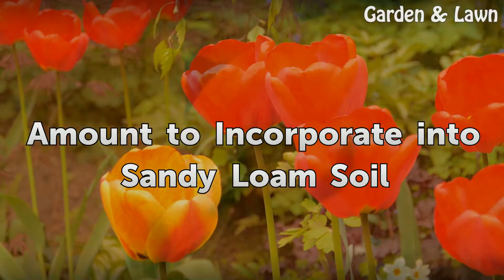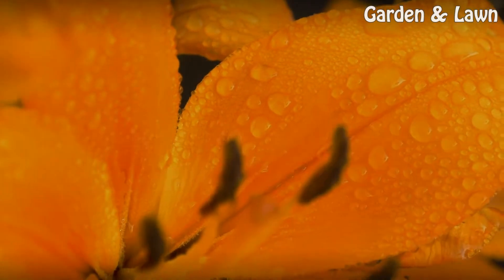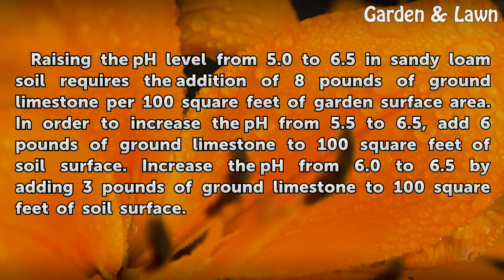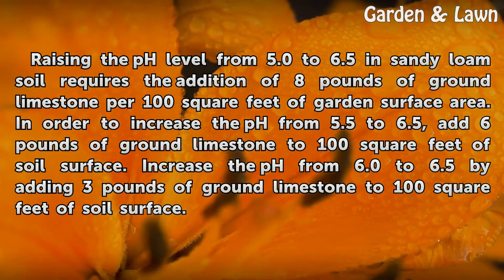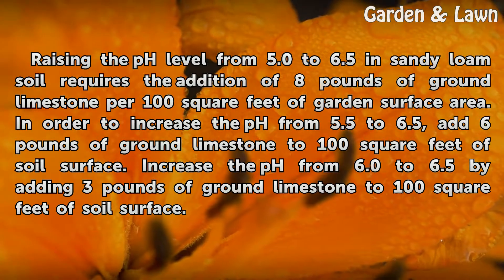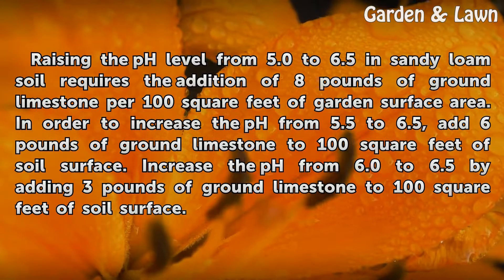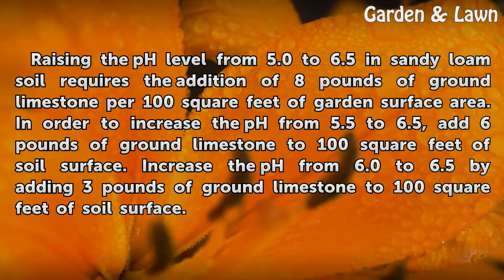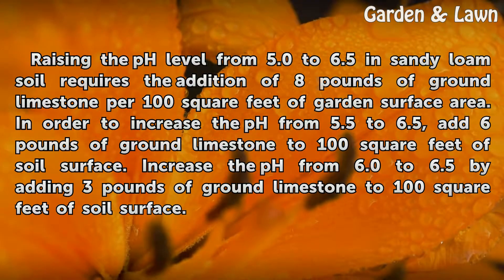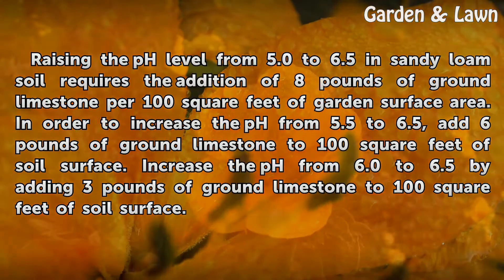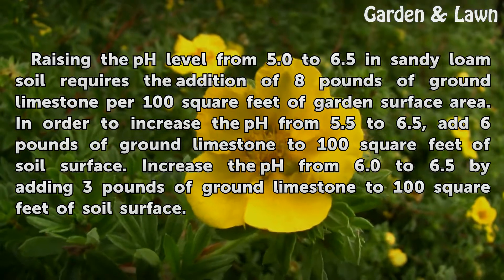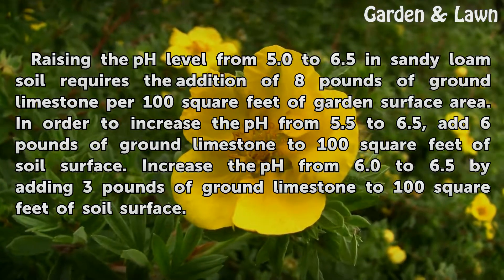For sandy loam soil, raising the pH level from 5.0 to 6.5 requires 8 pounds of ground limestone per 100 square feet of garden surface area. To increase the pH from 5.5 to 6.5, add 6 pounds per 100 square feet. To increase the pH from 6.0 to 6.5, add 3 pounds of ground limestone per 100 square feet.